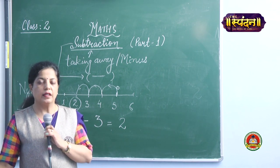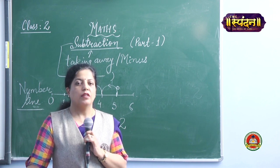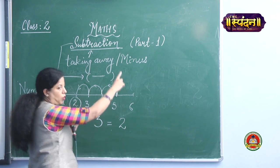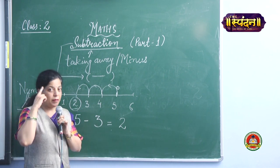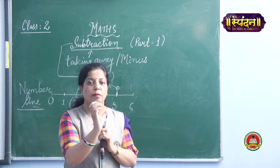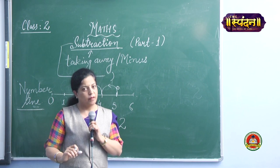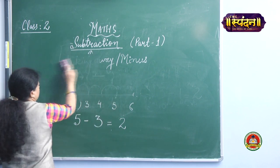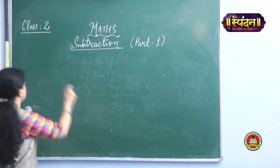Now there are certain rules and facts which we need to take care of while doing subtraction. The first and foremost is: whenever you are writing the numbers horizontally — or in our next class I will be teaching you the vertical column way also — the number from which we subtract should be the bigger number. The second number should be either equal or smaller; it should not be more.